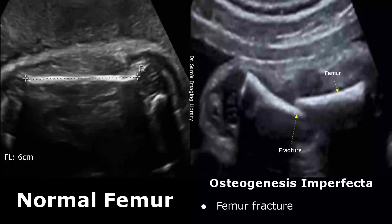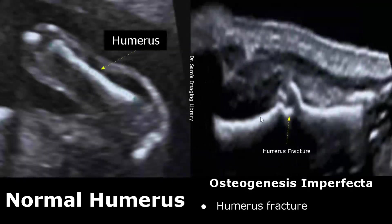Osteogenesis imperfecta also causes fractures in long bones. We may find a fractured femur, which will look like this. In this image we see a fractured humerus. You can see a disruption in the bone right here.